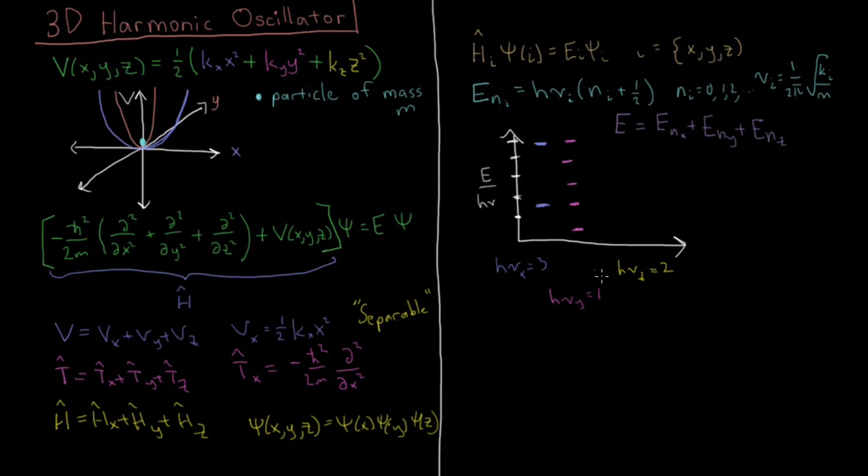And for z, if h nu z is equal to 2, at n equals 0 we have 2 times 1/2 is 1. At n equals 1, we have 2 times 1 plus 1/2, 3/2, 2 times 3/2 is 3, so our second state is there. Our third state is going to be at 5, etc. going up like that. So the spacing and the total of the energy levels is just going to depend on what the spring constant is in each dimension, and that affects what the vibrational frequency is in each dimension, how spaced apart the energy levels are.